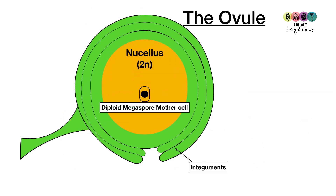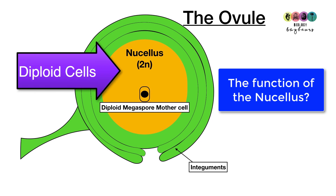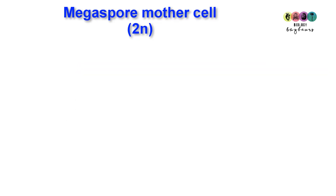Let's take a look at the ovule before all of this female gamete formation, because it might be asked what the function of the nucellus is. The nucellus is that mass of diploid cells that makes up the bulk of the ovule. Its function is to provide nourishment for the developing embryo sac.